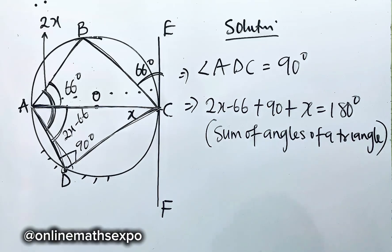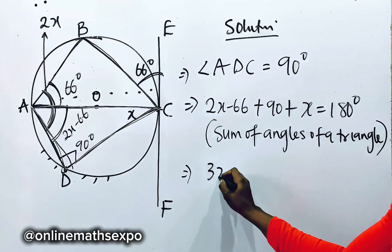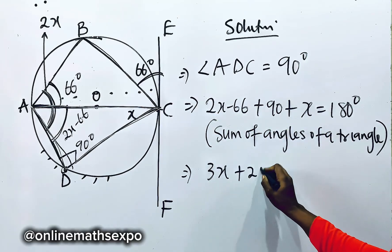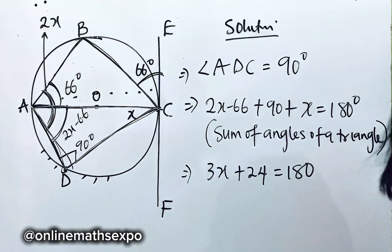Your reason is sum of angles of a triangle. So with this, we can have it as. Let's collect like terms. 2X add X gives us 3X. This add this will give us 24 is equal to 180. To remove positive 24, subtract 24 from both sides.